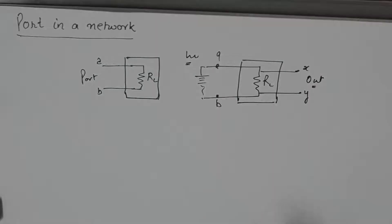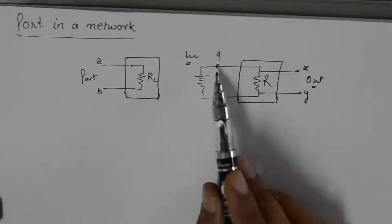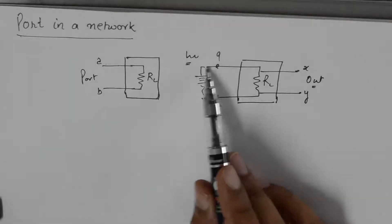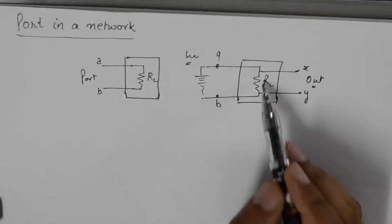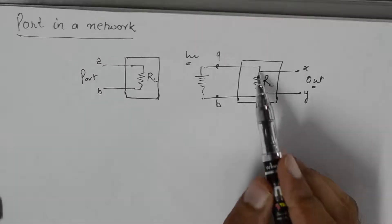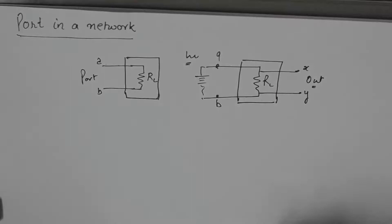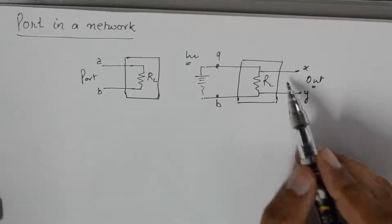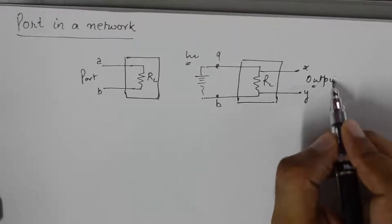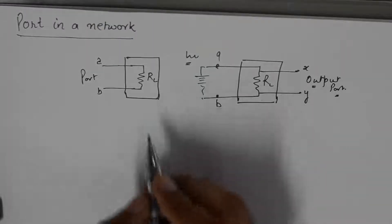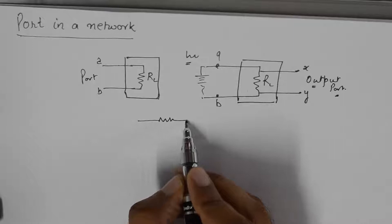It is not necessary to have physically four wires in order to get a two-port network. Logically, this network consists of just one loop. The point from where we want to take the output — the point we consider as the load — will be known as the output terminal or output port.